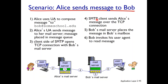In this scenario, Alice sends a message to Bob. Alice uses her user agent to compose a message to Bob's email address. Alice's user agent sends the message to her mail server, where it is placed in the message queue. The client side of SMTP opens a TCP connection with Bob's mail server.